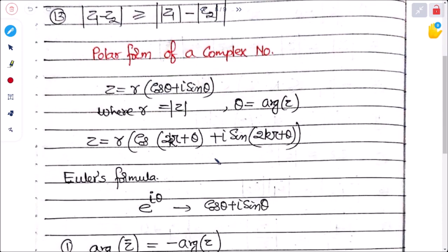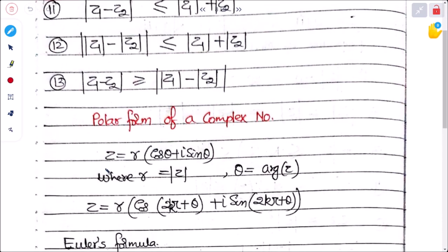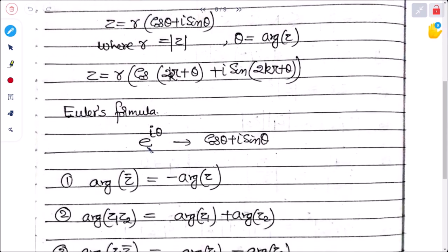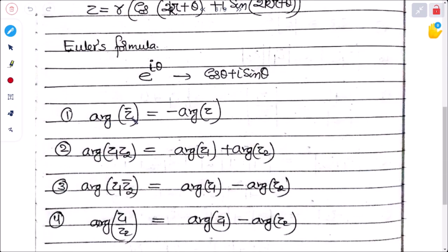The polar form is z = r(cos θ + i sin θ), where r = |z| and θ = arg(z). The general solution is z = r(cos(2kπ + θ) + i sin(2kπ + θ)). Euler's formula states e^(iθ) = cos θ + i sin θ.